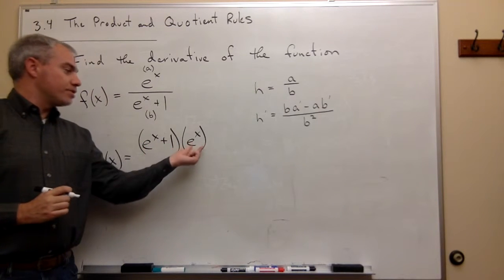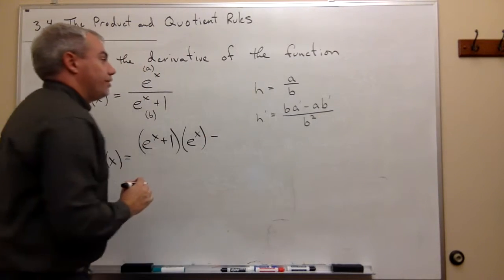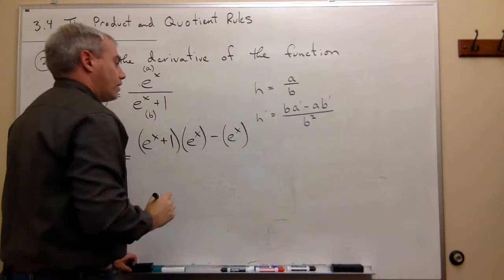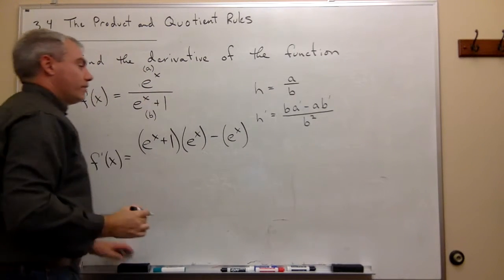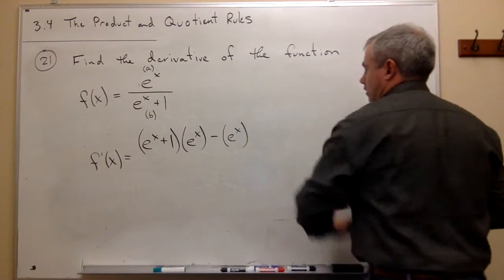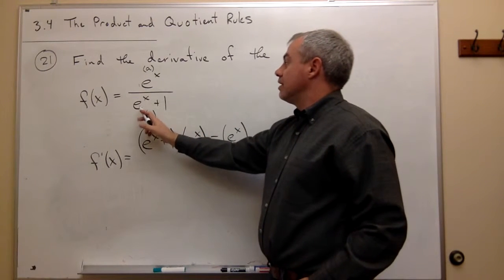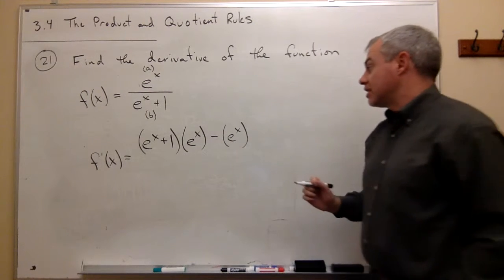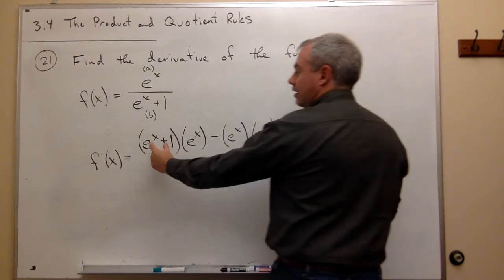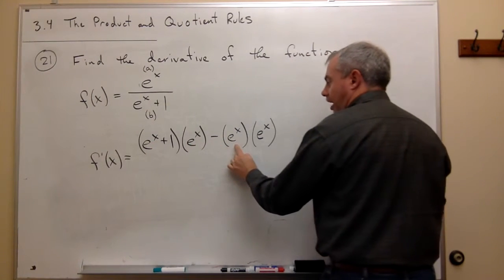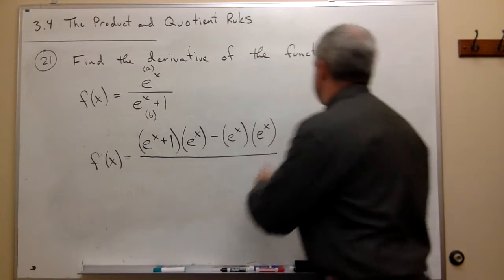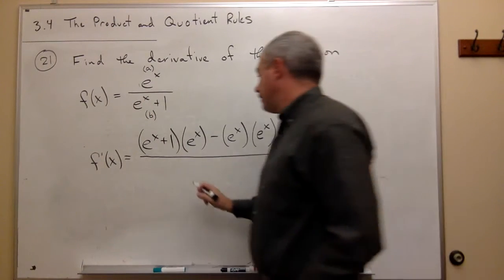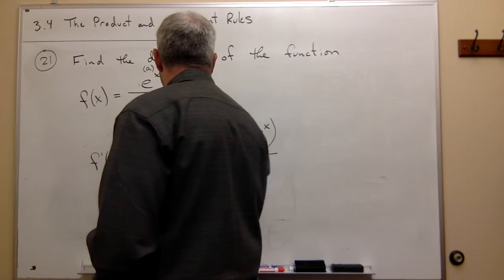So I've got the bottom times the derivative of the top, minus the top left alone. The top is e to the x, so I write down e to the x times the derivative of the bottom. The derivative of the bottom: e to the x's derivative is e to the x, and 1's derivative is zero, so the derivative of the bottom is just e to the x. So on the bottom of my derivative, I have e to the x plus 1, quantity squared.